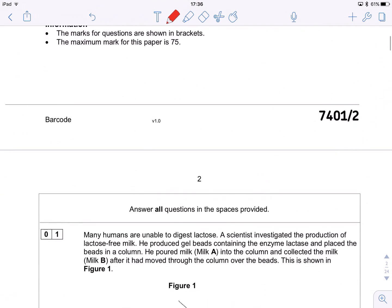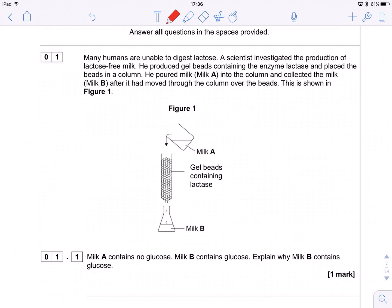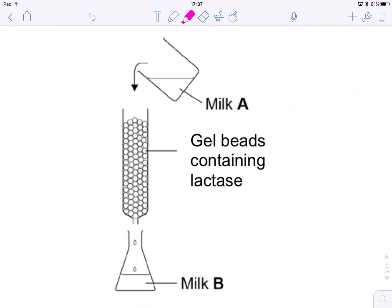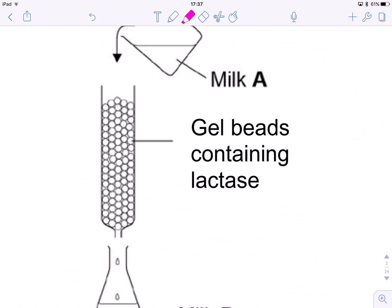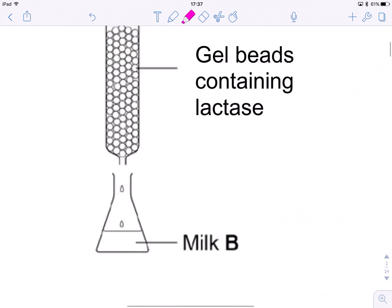But let's start with question one, which is actually a really nice starting point. This is actually more fact recall, a little bit of application in there. But we're told here that many humans are unable to digest lactose and that a scientist has investigated the production of lactose-free milk and he produced gel beads containing the enzyme lactase and placed the beads in a column. And he poured milk A into the column and collected milk B after it had moved over the beads in the column. Now this is like a GCSE question. Those of you who've done AQA GCSE biology will recognize this as a typical enzymes and industry question. So on these beads, you've got the lactase stuck there, you pour the milk through, the enzymes do their thing and you collect your product out of the bottom.